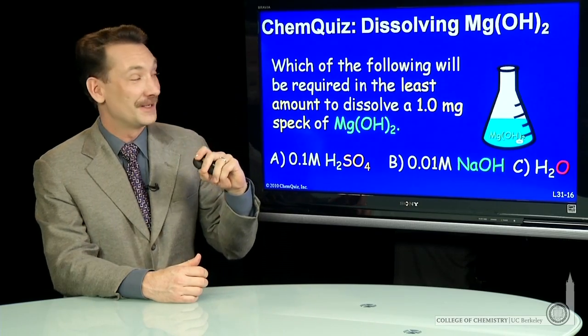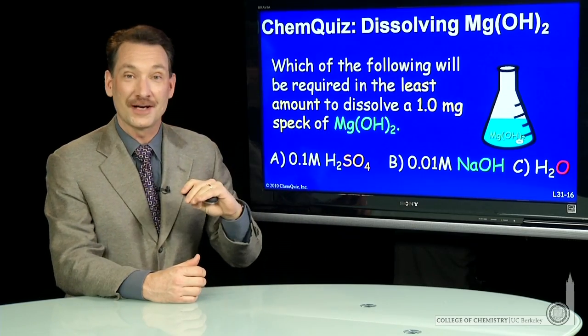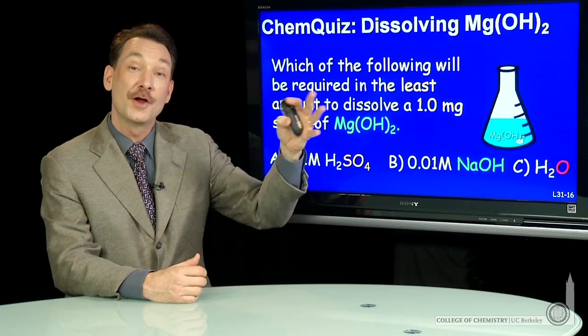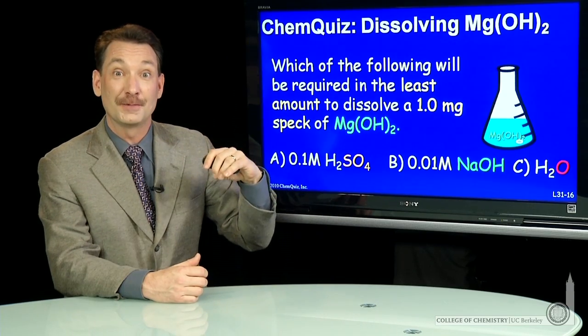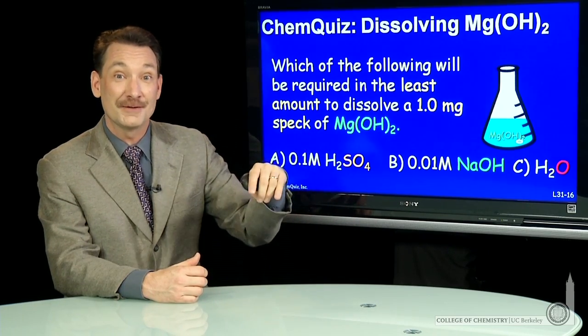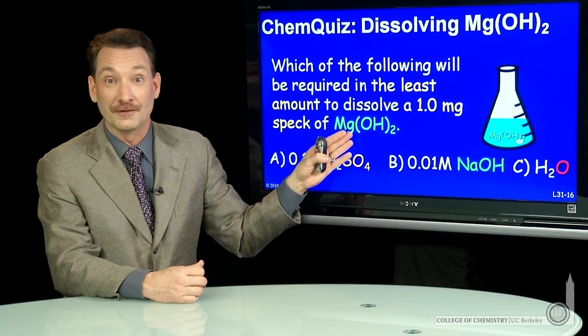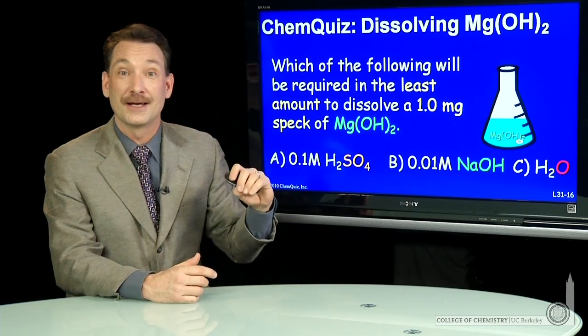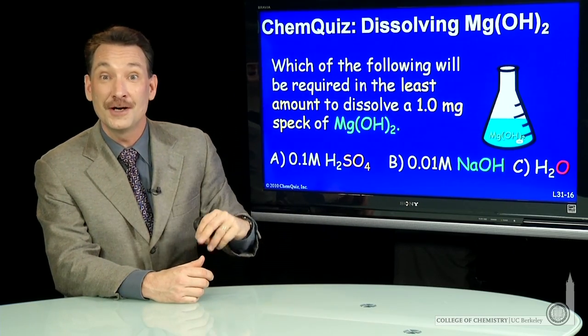Let's look at dissolving a solid. We'll have magnesium hydroxide and we'll put it in water. We'll stir it until it completely dissolves. Keep adding magnesium hydroxide until it will no longer dissolve, and there's just a speck that, no matter how hard we stir, won't dissolve.